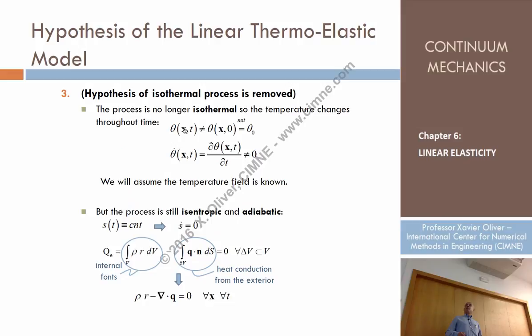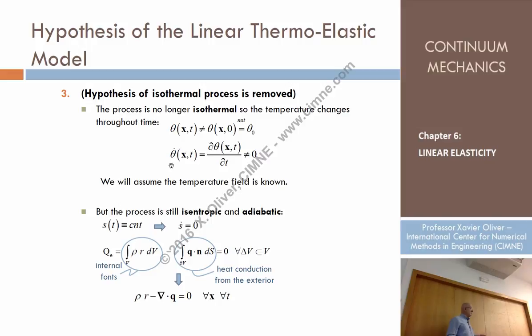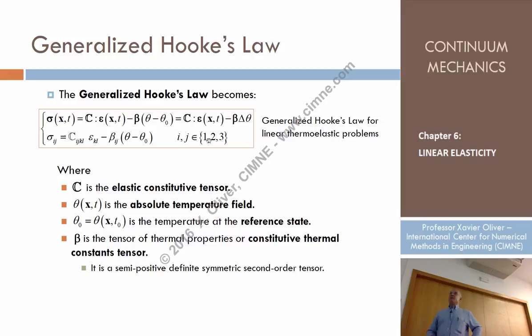If we talk about theta as the absolute temperature, the hypothesis that this temperature was equal to the original one and that the rate of this temperature is zero is no longer valid. We assume that the rate of temperature can now be different from zero, so there are increments of temperature with respect to the reference configuration. The isentropic and adiabatic conditions mean that entropy is kept constant and, in local form, the local counterpart of heat entering into the particle due to sources and conduction is equal to zero.